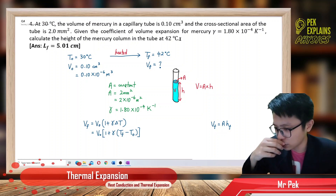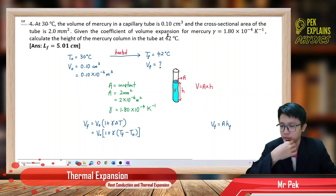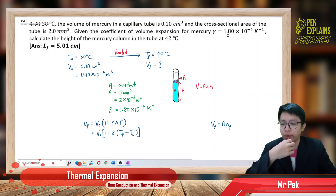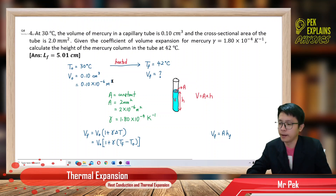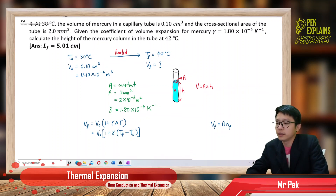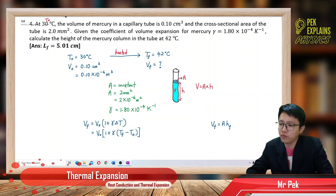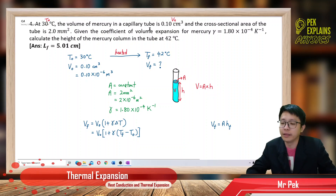So this is about volume expansion. I've given you the gamma already — the coefficient of volume expansion gamma for mercury, 1.8 × 10⁻⁴. The 30 degrees Celsius is the initial temperature. We already have the initial temperature, 30 degrees Celsius. The volume of the mercury is 0.1, so that is the initial volume in cm³. You need to change to SI unit.